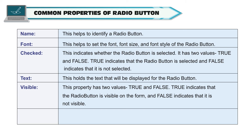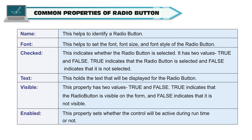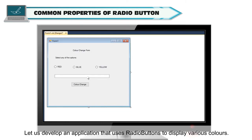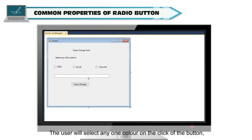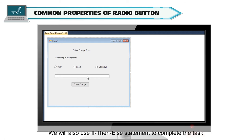Visible property has two values — True indicates the Radio Button is visible on the form, and False indicates it is not visible. Enabled property sets whether the control will be active during runtime or not. Let us develop an application that uses Radio Buttons to display various colors. The user will select any one color on the click of a button, and the color will be displayed in the text box using an If-Then-Else statement.